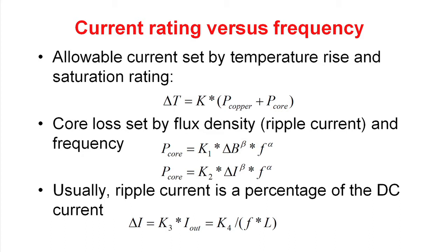Again, the core loss is equal to some constant times the change in flux density raised to a b power times the frequency raised to an a power. Or since the ripple current is related to the flux density, we can simply put the power in a core is equal to a new constant times the change in current raised to a b power times the frequency raised to an a power.